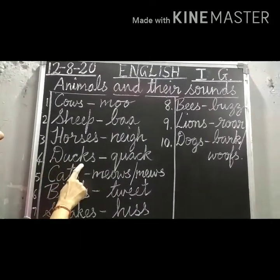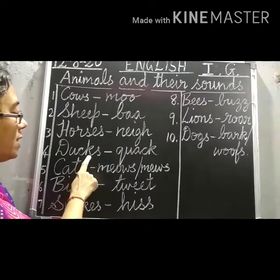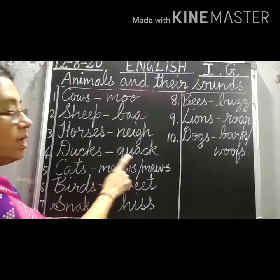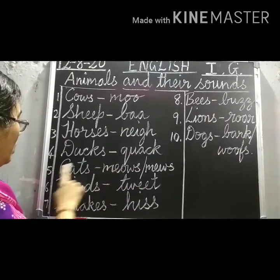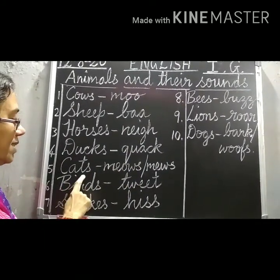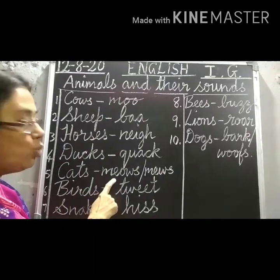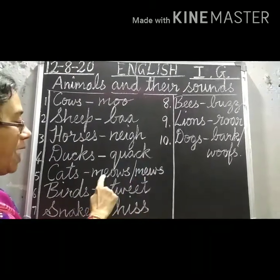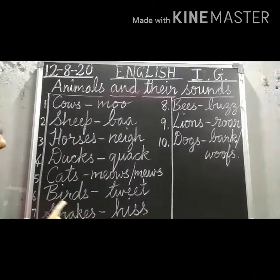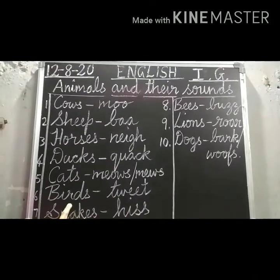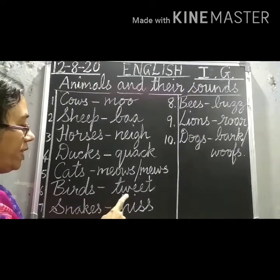Number four: Ducks. What is the sound of the ducks? Ducks — quack. Number five: Cats. Cats meow or mew. Number six: Birds. Birds — tweet.